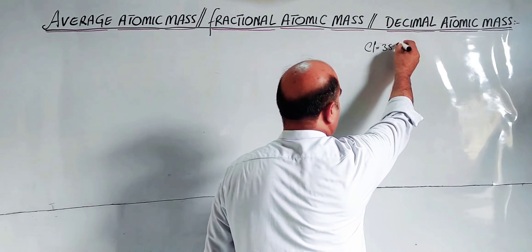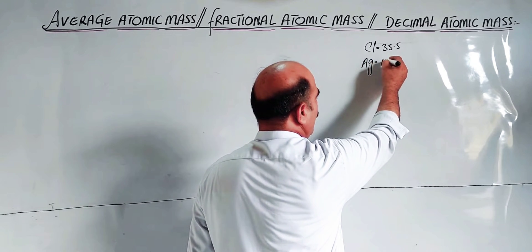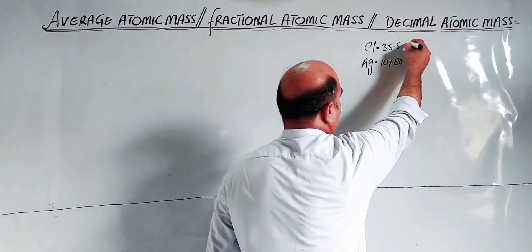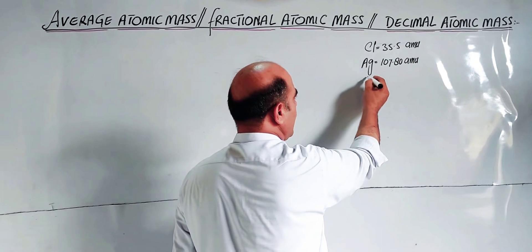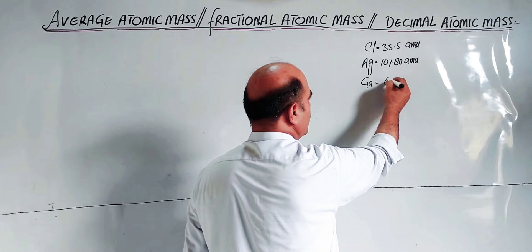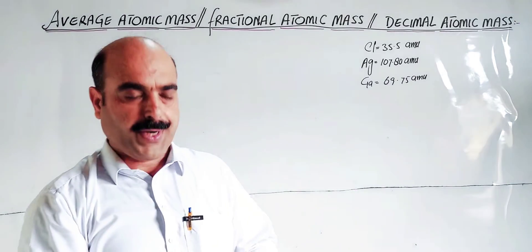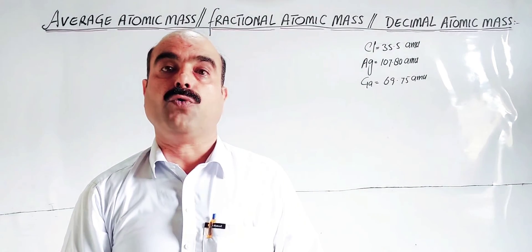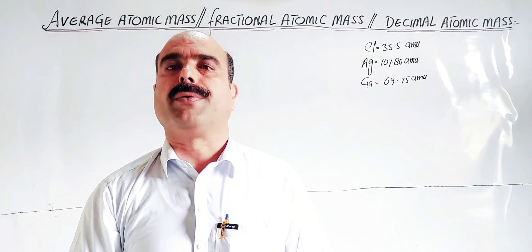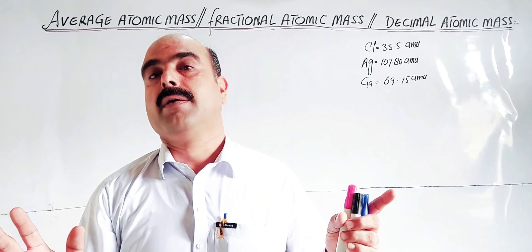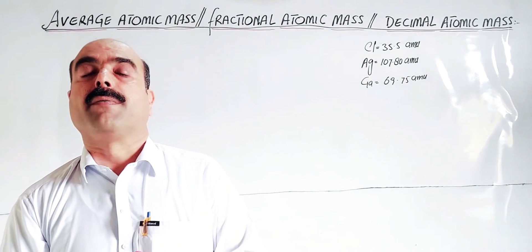Similarly, silver's relative atomic mass is 107.80 AMU — again a decimal. Gallium's atomic mass is 69.75 AMU. Neon is 20.19 AMU. Carbon is 12.01. Calcium is 40.01, and so on. So students, many elements have decimal or fractional relative atomic masses.